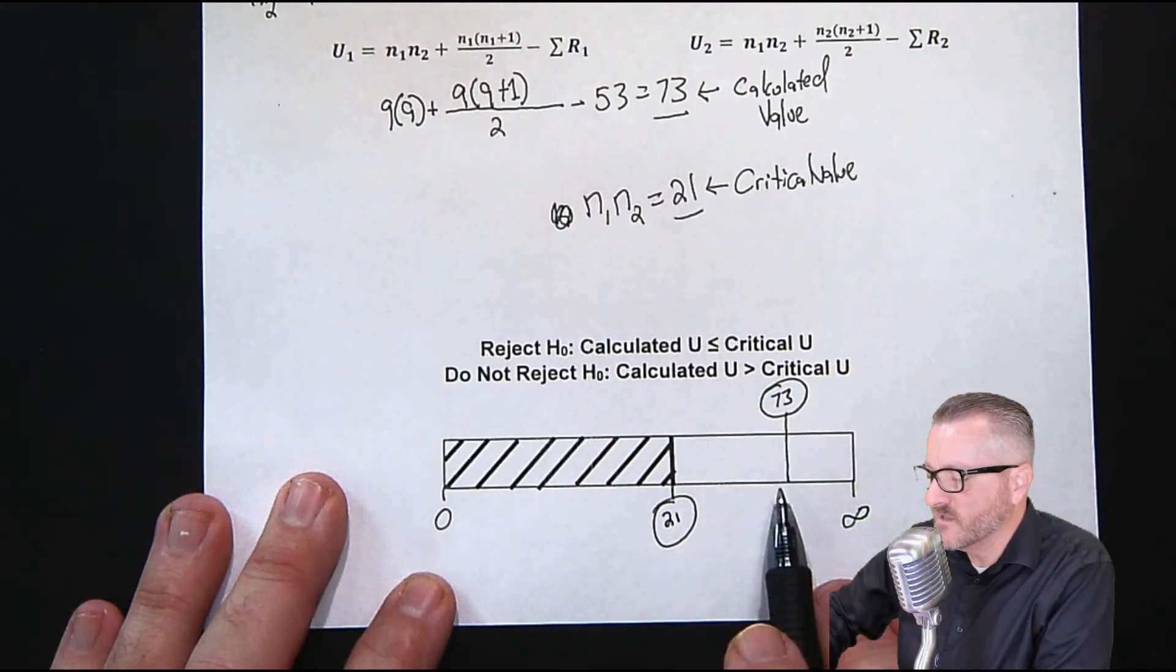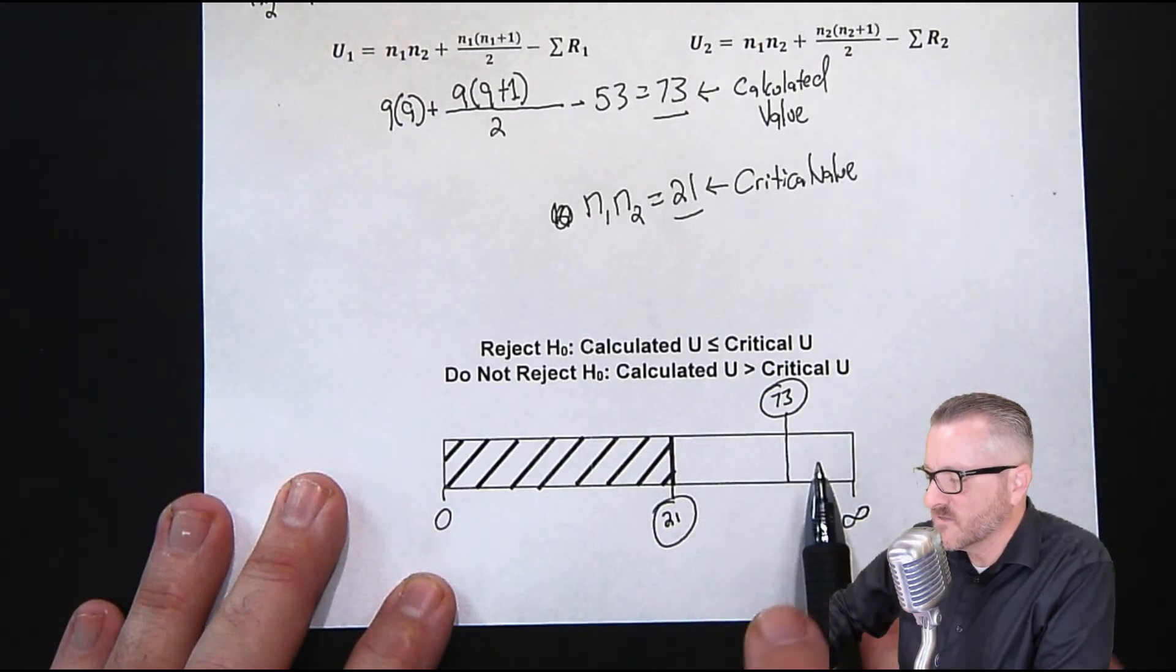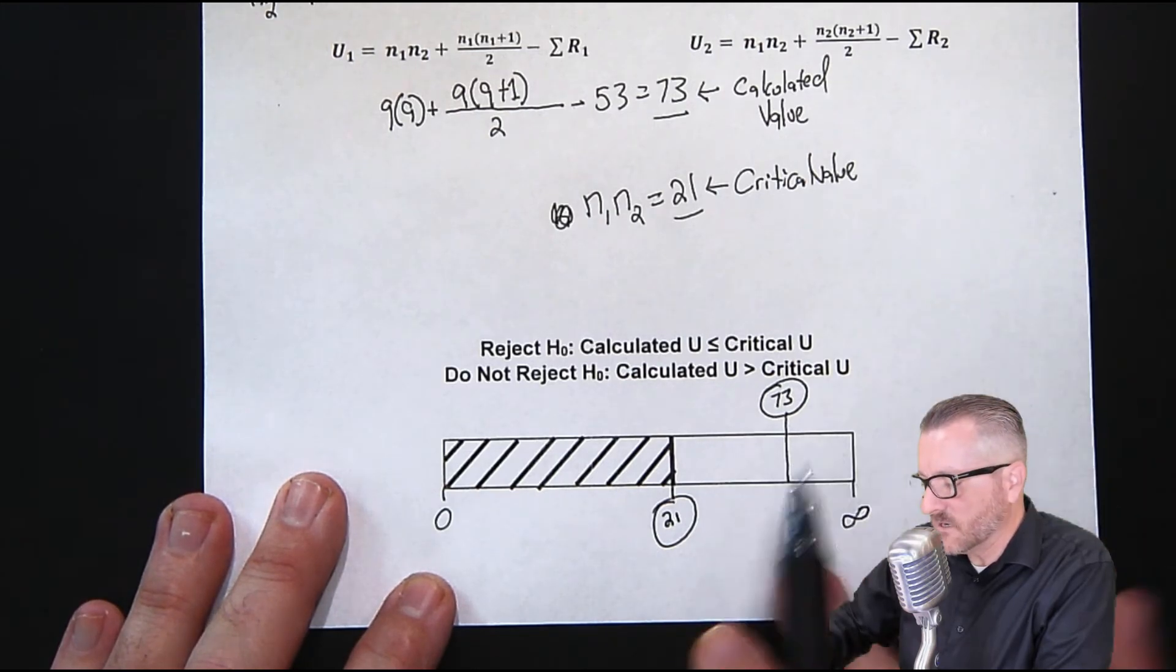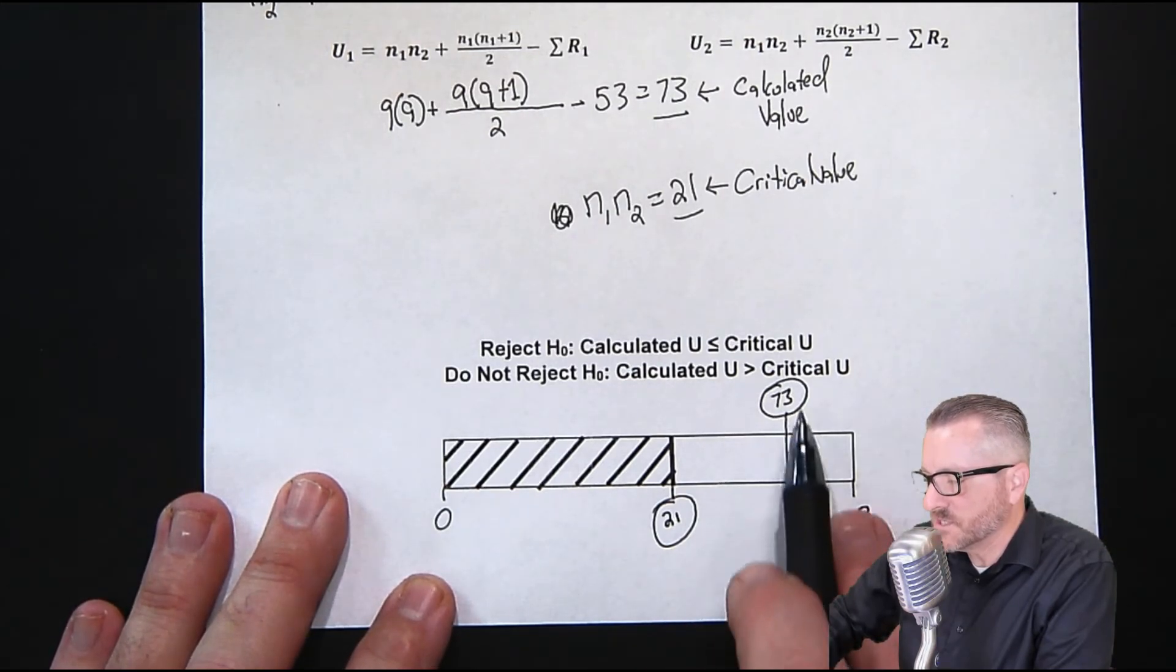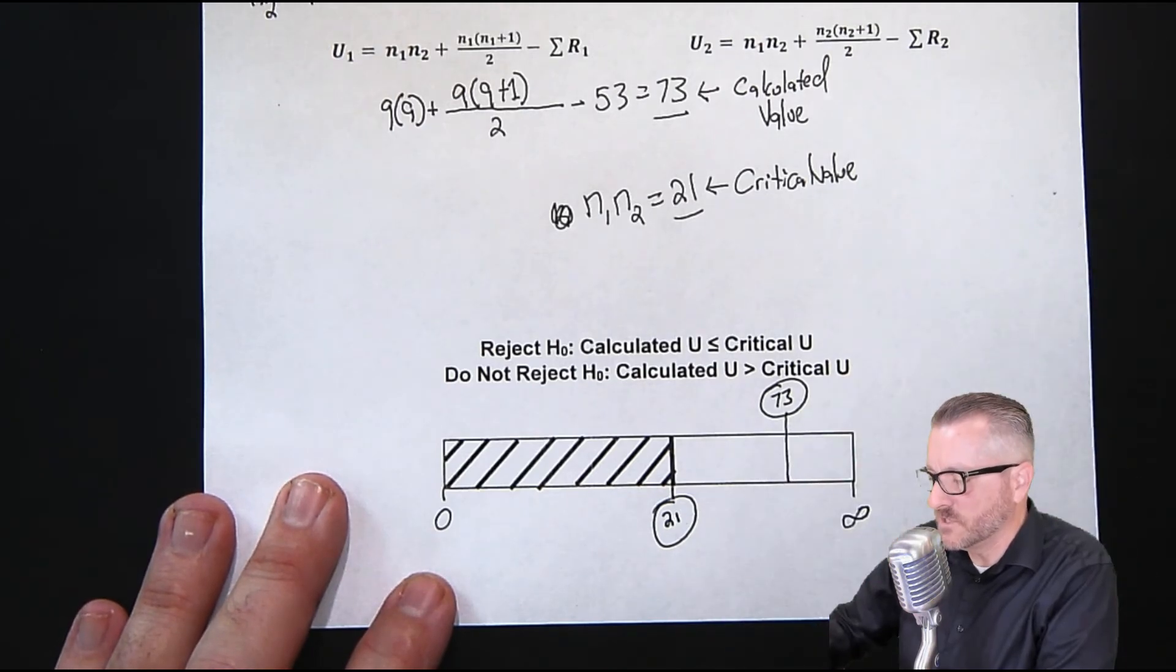So, what this means, if we flip this, and we stick to the rejection zone idea, which I recommend, we are not in the rejection zone. So in that case, in this case, we are not going to reject.